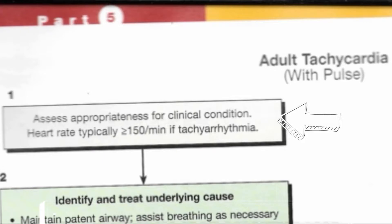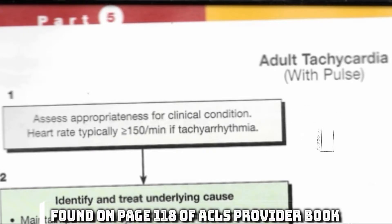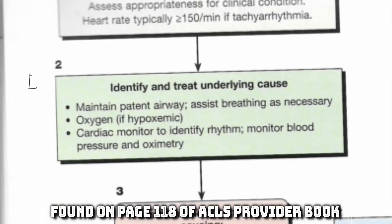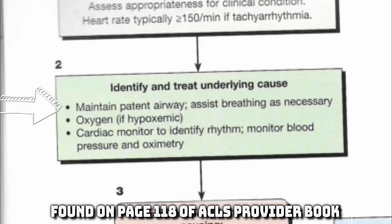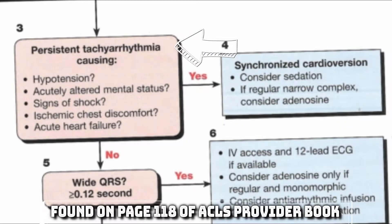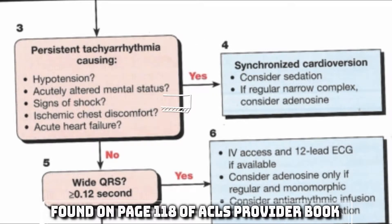Since Mr. Davis has a heart rate over 150, we will follow the adult tachycardia with a pulse algorithm. Step 2 asks us to try to identify and treat underlying causes — that includes issues with the airway, perfusion, and leaving the patient on a monitor, which we have already done. Step 3 is now asking us to determine if the tachyarrhythmia is causing hypotension, altered mental status, shock, heart failure, or chest discomfort.